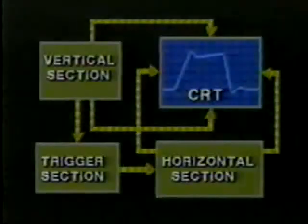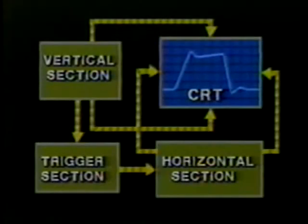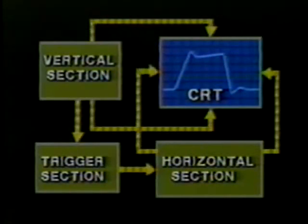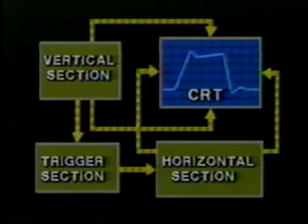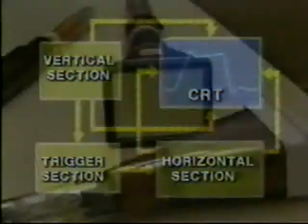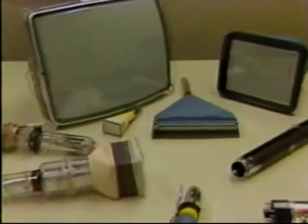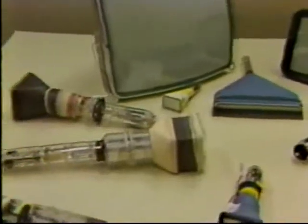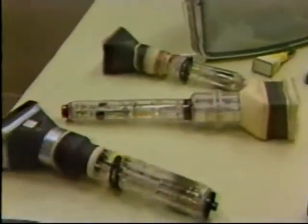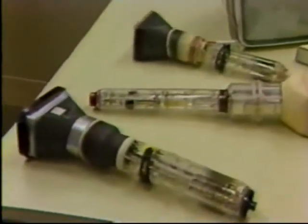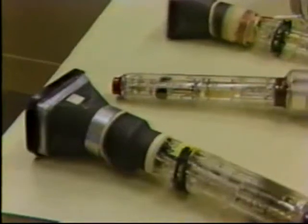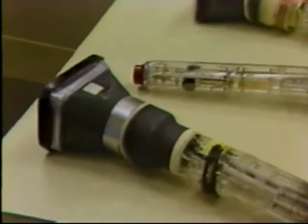Now let's examine the last functional block in our simplified look at an oscilloscope. The cathode ray tube is the output or display section of the oscilloscope. CRTs come in many shapes and sizes — storage tubes, mini scopes, and display monitors require very different configurations — but all operate on the same principles.